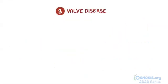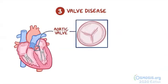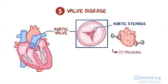Finally, let's look at valve diseases. Starting with the aortic valve, which sits between the left ventricle and the aorta: if the aortic valve doesn't open all the way — a condition called aortic stenosis — the heart must generate more pressure in order to eject blood during systole. This increases the stress on the left ventricular wall, therefore increasing afterload.